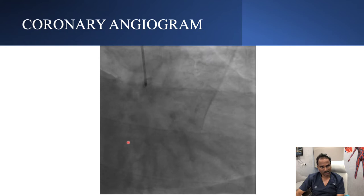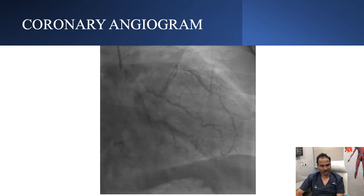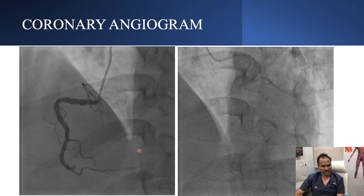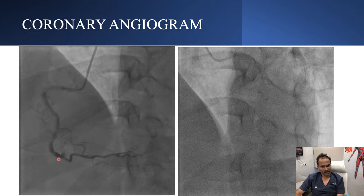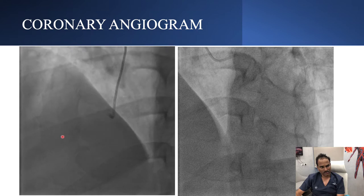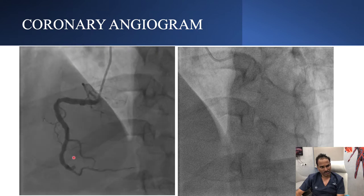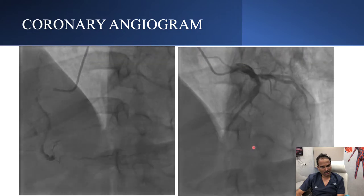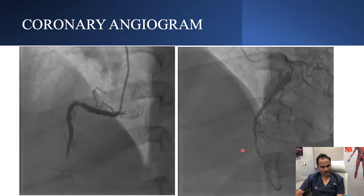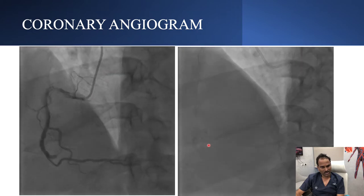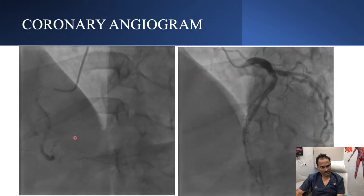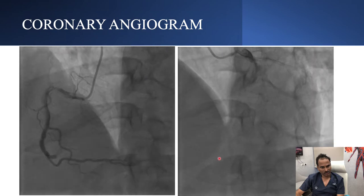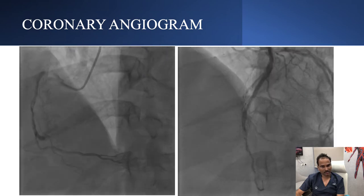This is again the epicardial collateral which is filling right coronary artery. We can see this is right coronary artery, which is tortuous. The distal vessel also appears to be tortuous. It's a very long CTO, which you can understand in LAO sections of RCA and left system, which shows there is a long length CTO.